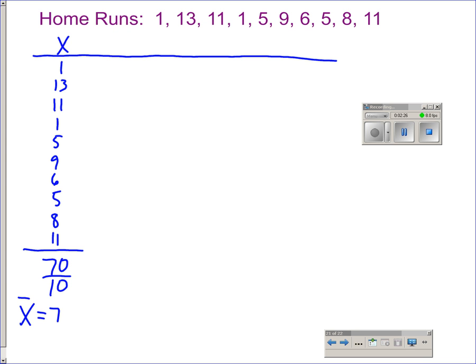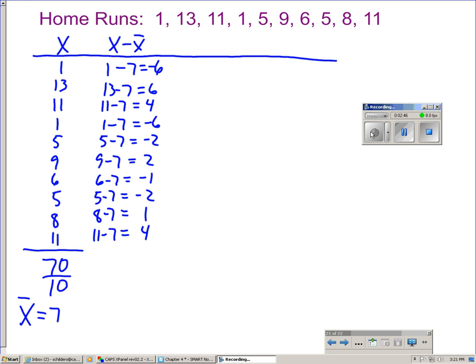Next we're going to find the standard deviation. To find the standard deviation, we first find all the deviations. How far is each value from the mean? We're going to do x minus x̄. So 1 minus 7, 13 minus 7, etc., until we have calculated all the deviations.